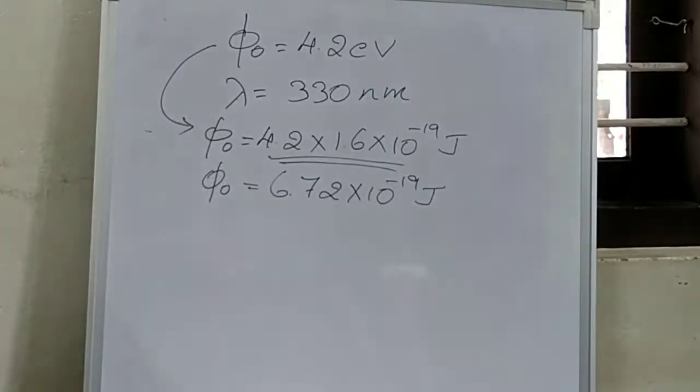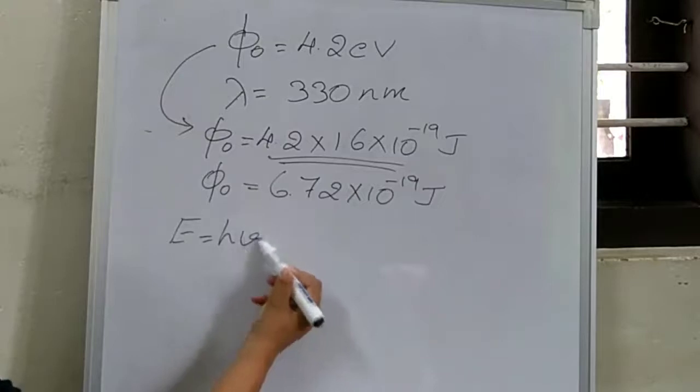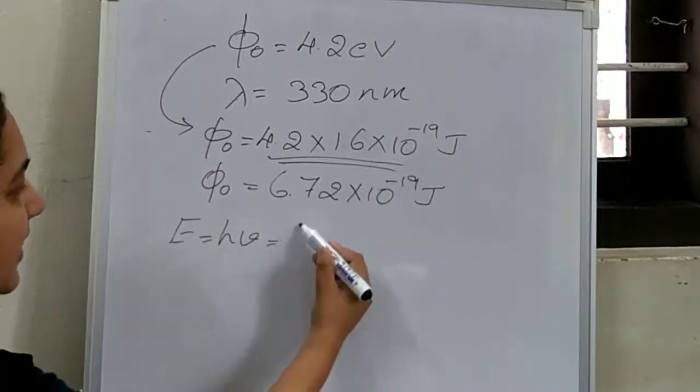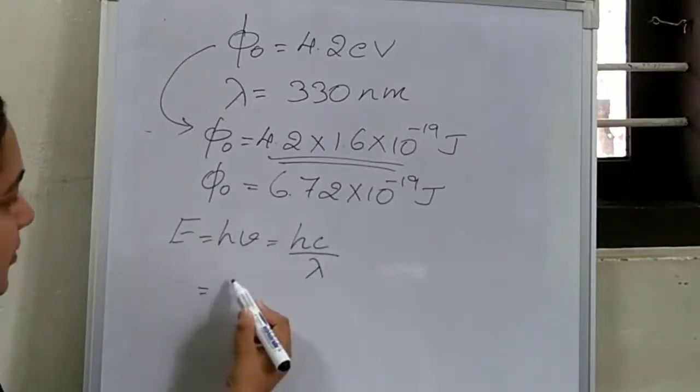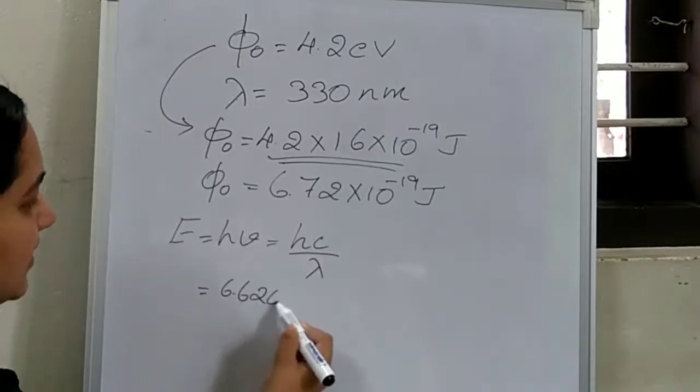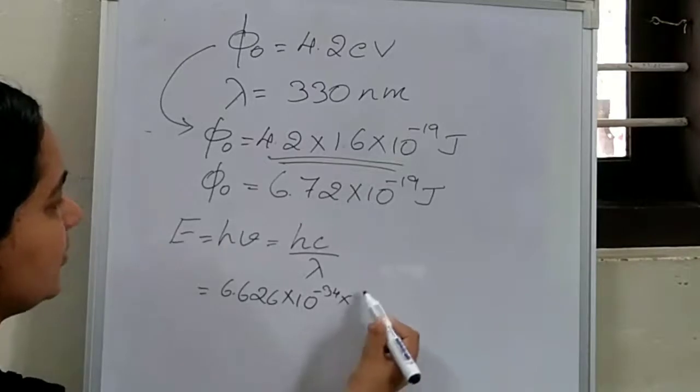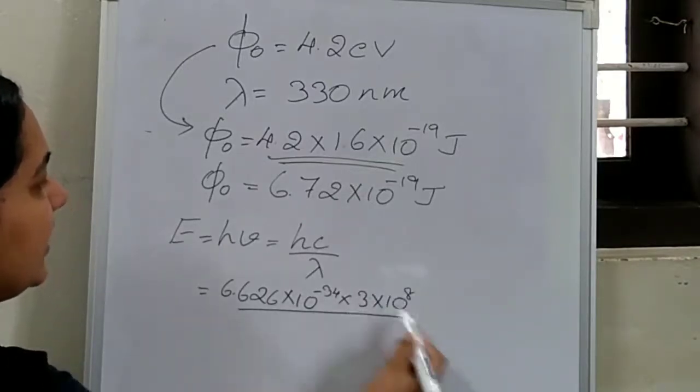Now we can calculate the energy of the incident radiation. Energy E equals hν. Here, the given value is wavelength not the frequency. In terms of wavelength, hc by λ, which is equal to 6.626 into 10 to the power of minus 34 into 3 into 10 raise to 8 divided by λ.